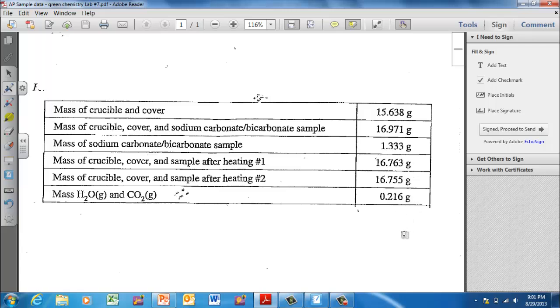What's going to be really important is going to be this value right here, the 0.216 grams, which is the mass of the water and the carbon dioxide. And we got that from taking the heat after heating number two and subtracting the crucible and the cover, and that's where we ended up with our 0.216.